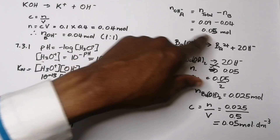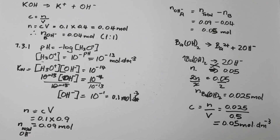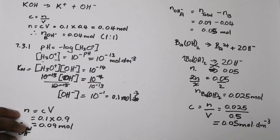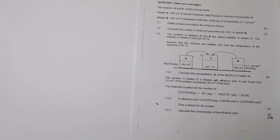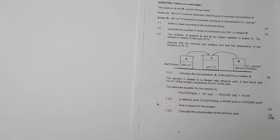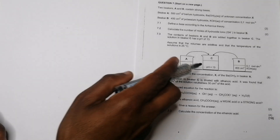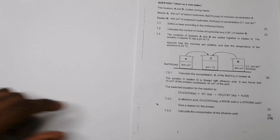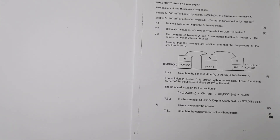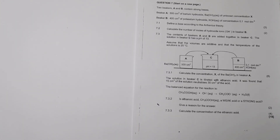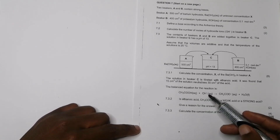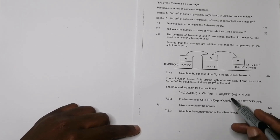To summarize the approach: we found the total moles of OH⁻ in the combined solution, subtracted the contribution from beaker B, and used the remainder to work out the concentration of Ba(OH)₂. Moving on — the next question tells us the solution in beaker C is titrated with ethanoic acid: 15 cm³ of beaker C's solution neutralizes 30 cm³ of the acid.